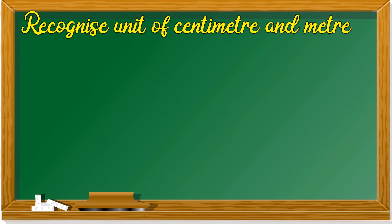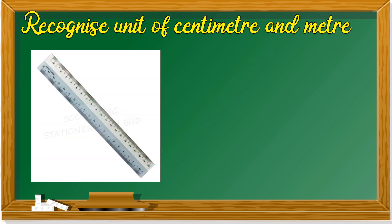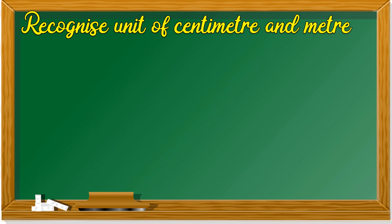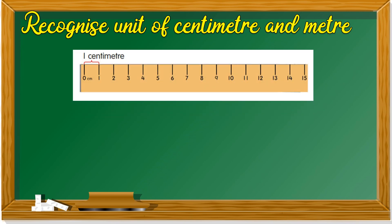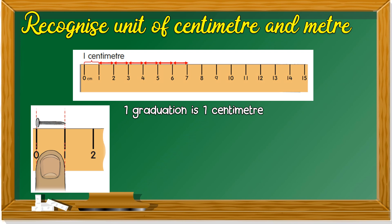Let's recognize unit of centimeter and meter. What is this class? This is a ruler. I'm sure all of you has a ruler. So a ruler, a graduation, each graduation is one centimeter. One graduation is one centimeter. The ruler you have usually is about 15 centimeter. And if you put your fingers on your ruler, you might get roughly one centimeter. The symbol of centimeter is CM. CM stands for centimeter.